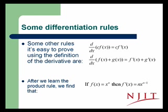Some differentiation rules we can prove using the definition of the derivative, and these are very simple to prove, just plug in, are that the derivative of a constant times the differentiable function is that same constant times the derivative of the function. So the derivative of cf of x is c times f prime of x.